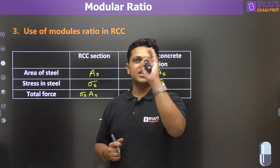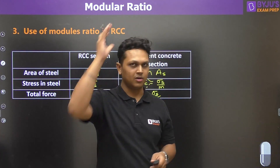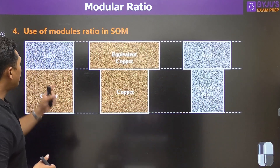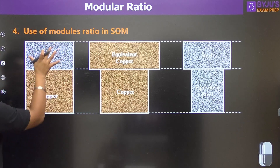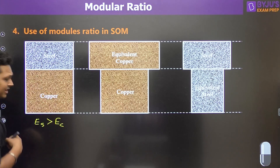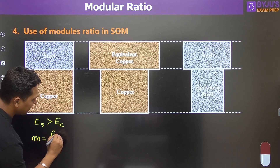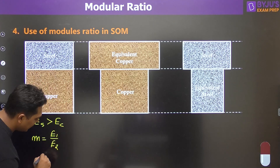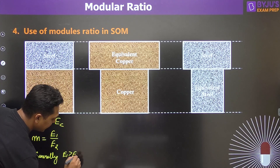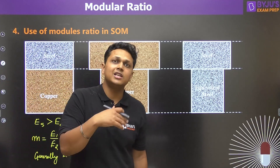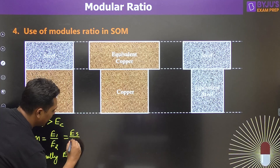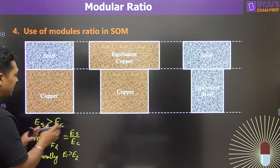In RCC, we convert steel into equivalent concrete and do all analysis in concrete only. The same concept applies in strength of materials when analyzing composite beams. For a composite beam made of steel and copper, since E_steel > E_copper, the modular ratio m = E_steel / E_copper. Generally we take E1 > E2, but it is up to us what we want to define as the modular ratio.